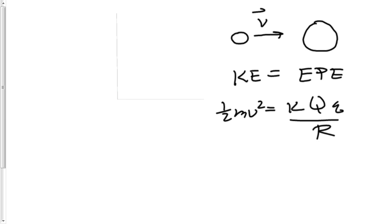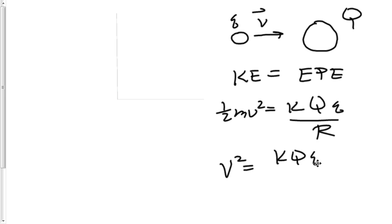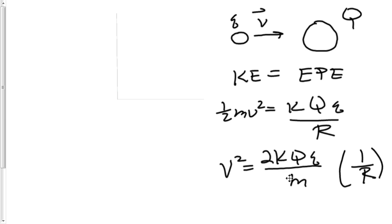We're going to let big Q represent the charge of the gold atom, and little q represent the charge on the alpha particle as it's coming in. Now, what we want to do is get velocity by itself in this equation. We notice that the relationship is actually v squared. So we have velocity squared is equal to K times big Q times little q, and then 1 over r on the outside. Because these are all constants, the one half becomes a 2 as we divide to the other side, and mass will be on the bottom.